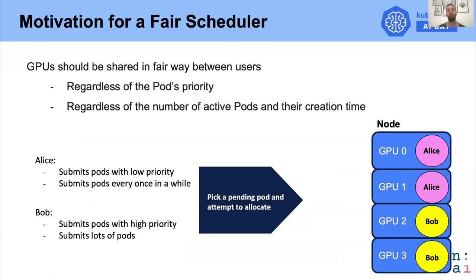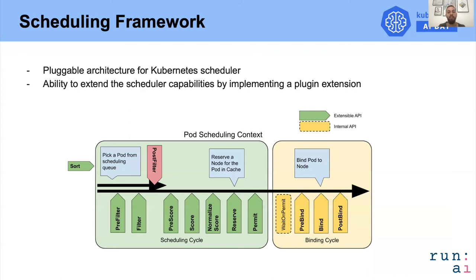In v1.15 of Kubernetes, the architecture of the scheduler was changed to use the scheduling framework. The scheduling framework is more pluggable and provides several extension points to change the behavior of the scheduler. It was a big game changer for building a different scheduler, because it reduces the need for developers to build their own scheduler from scratch and keep up with all Kubernetes features.